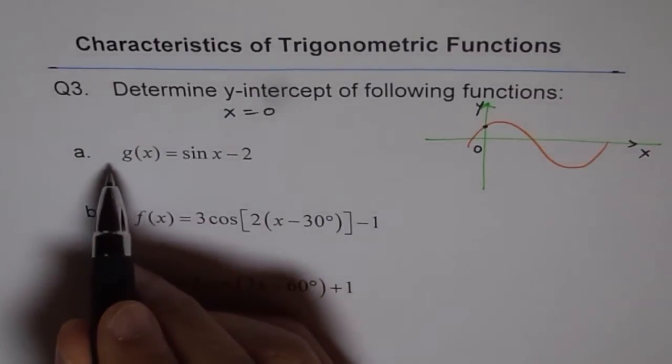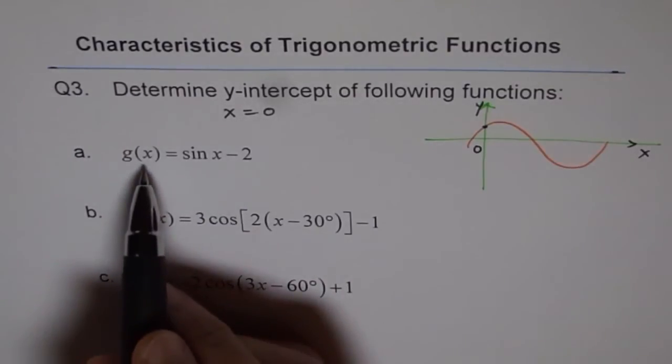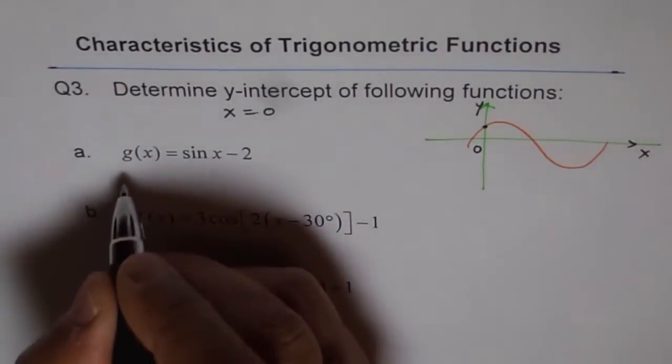So to find a y-intercept is literally substituting 0 for x and then finding the value of the function. For example, question 1a is g(x) equals to sin x minus 2. So to find y-intercept, we will put x as 0.